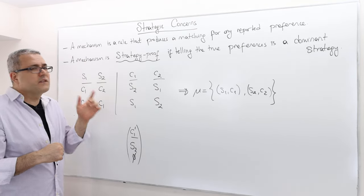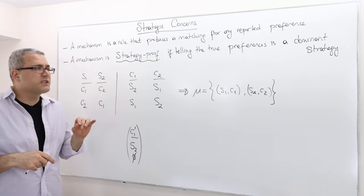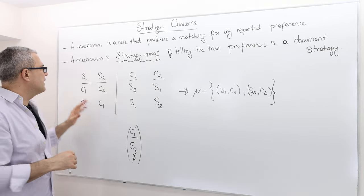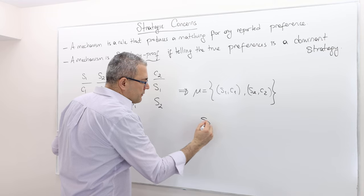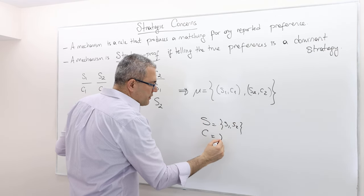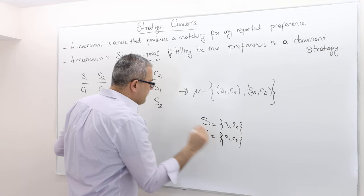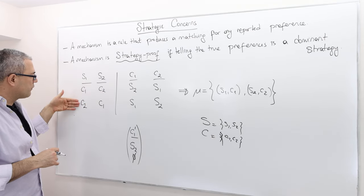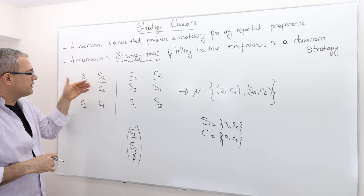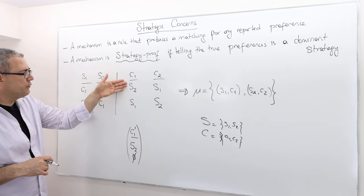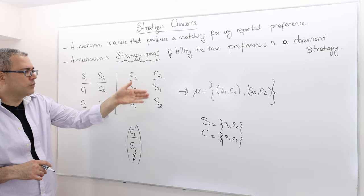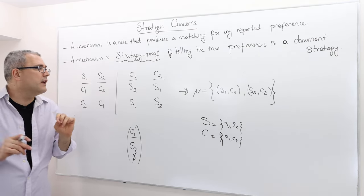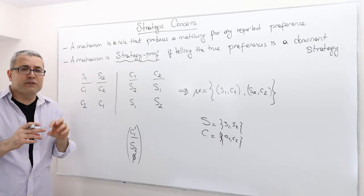Let's understand the concept of strategy-proofness by a simple example. Suppose there are two students, S1 and S2, and two colleges, C1 and C2. All colleges are acceptable for all students. Student 1 prefers College 1 over College 2. Student 2 prefers College 2 over College 1. College 1 prefers Student 2 over Student 1. College 2 prefers Student 1 over Student 2. If these are the true preferences and everybody declares them truthfully, let's focus on College 1.